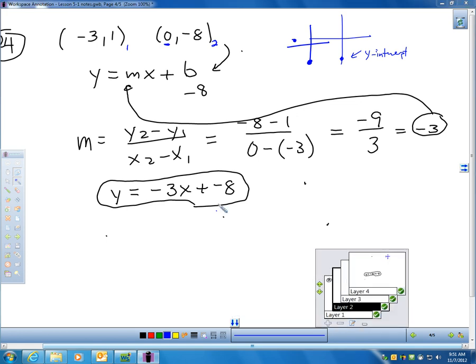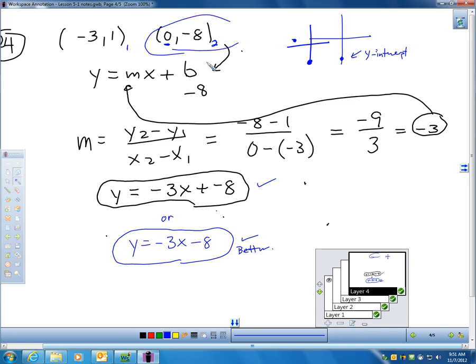which means my equation is y equals negative 3x plus negative 8. Or, I guess I could put, actually, be nicer, I guess, if I wrote it out as just y equals negative 3x minus 8. Because, plus negative 8 is the same as minus 8. Either one of these I would take. I guess I would call this better. Okay? So, all we had to do here to find our equation is quickly calculate the slope. You can see the y-intercept right there.